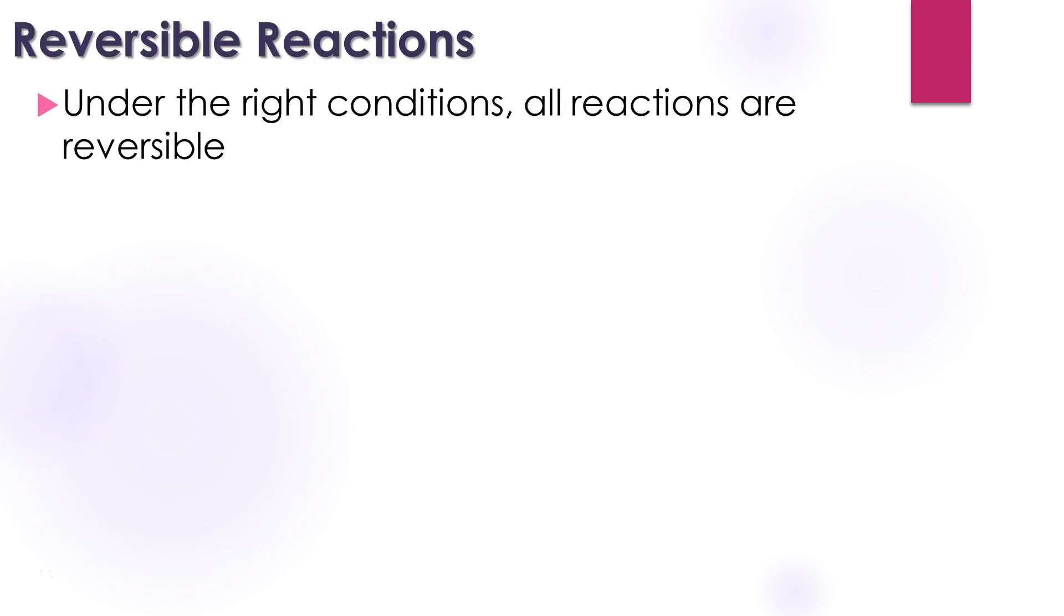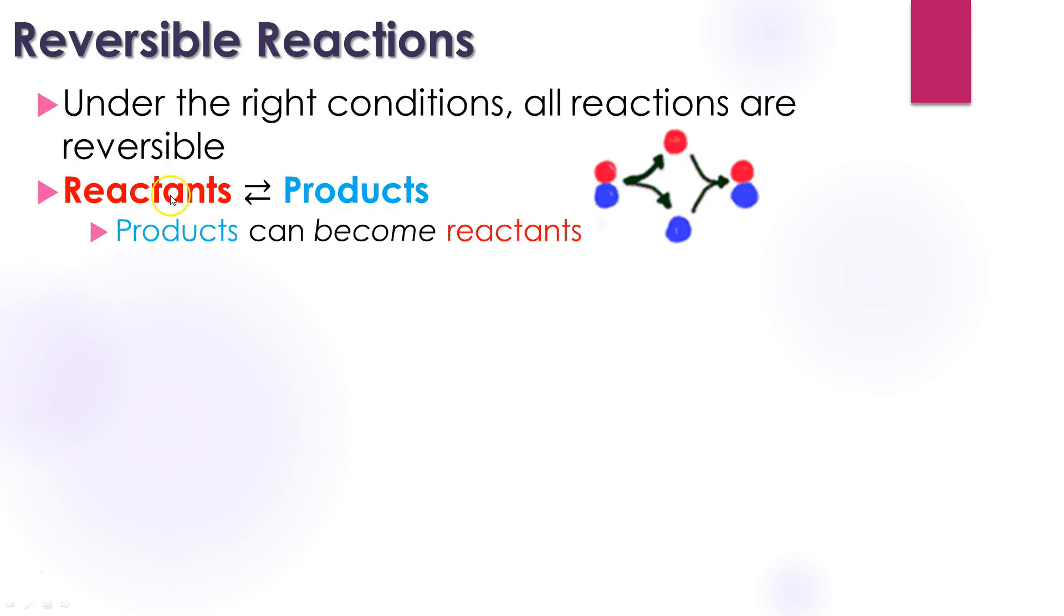We've been talking a lot about reactions, but under the right condition, all reactions are actually reversible. So a reaction can break down to form something else, and those can reform to make the original product. The reactants can become the products, and those products can become a new reactant and almost grow backwards. These two reactions are happening simultaneously. Products can become reactants.